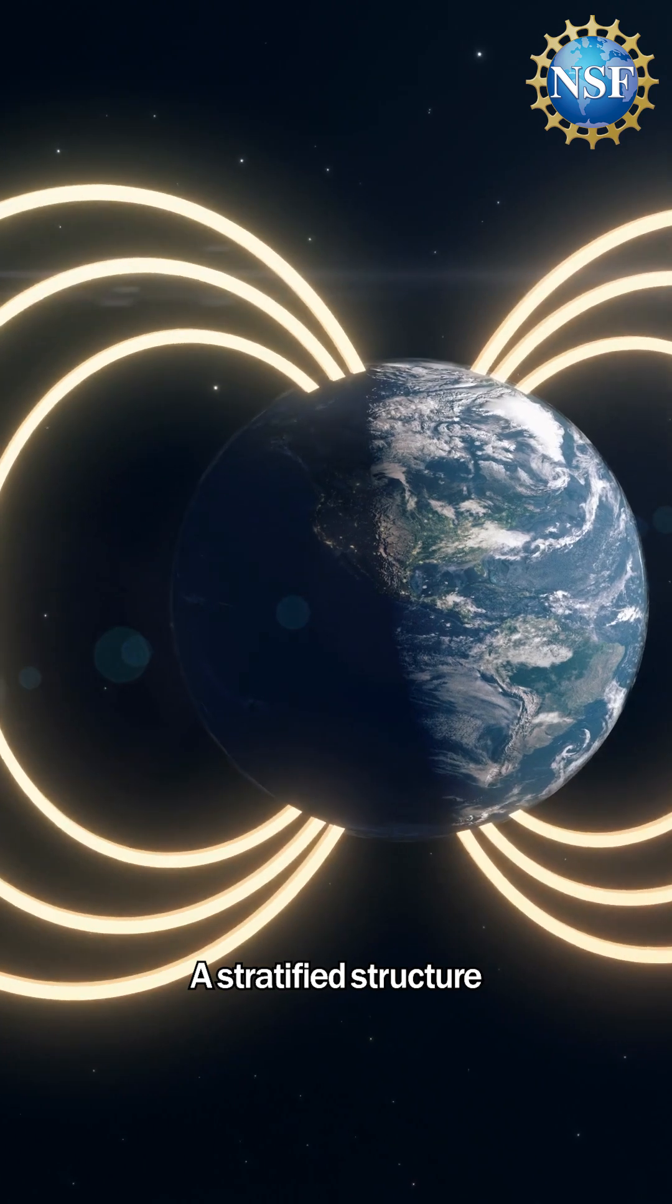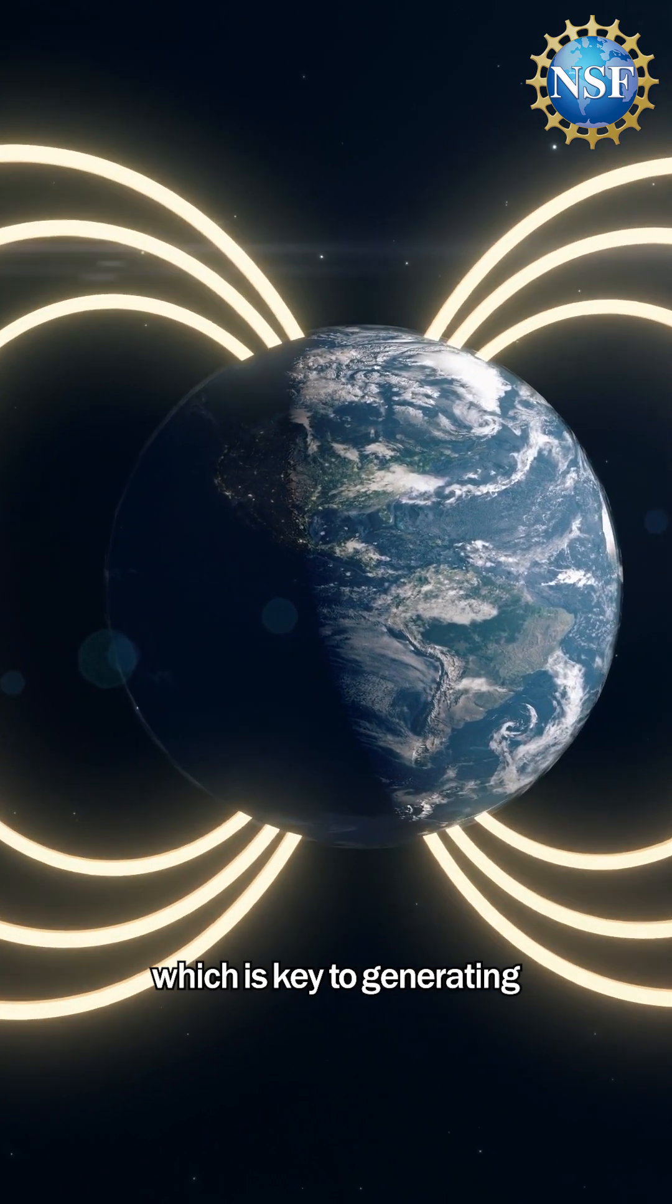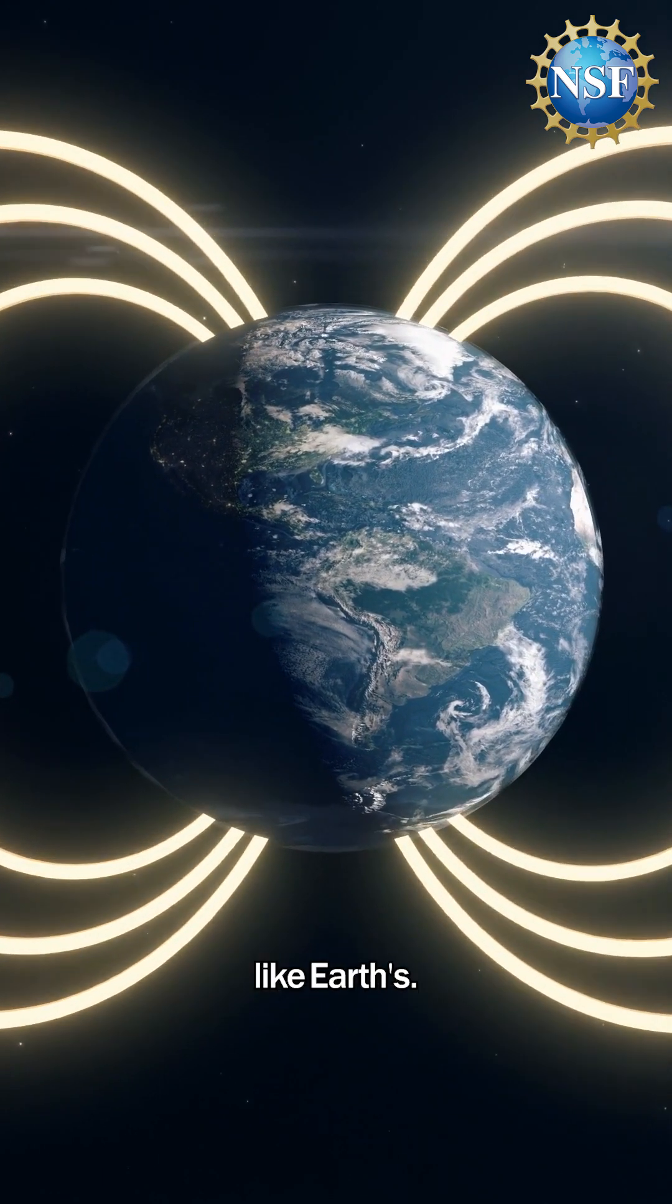The result? A stratified structure that prevents large-scale convection, which is key to generating orderly magnetic fields, like Earth's.